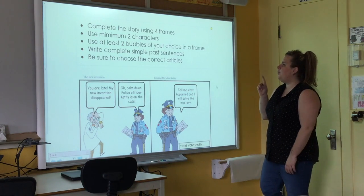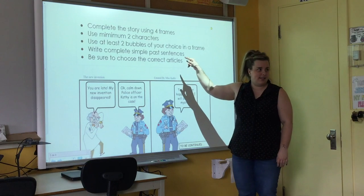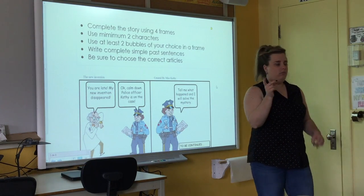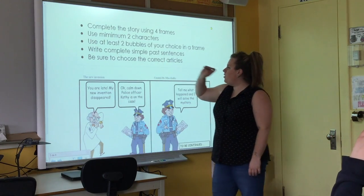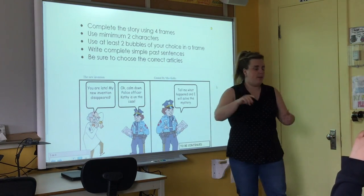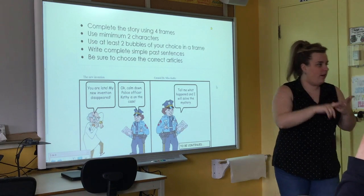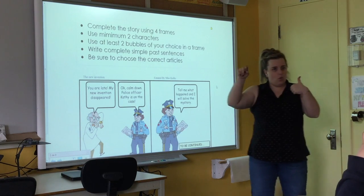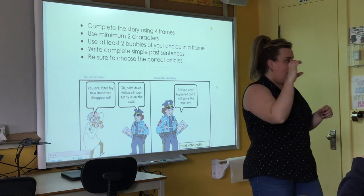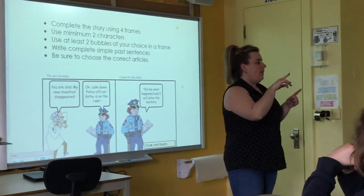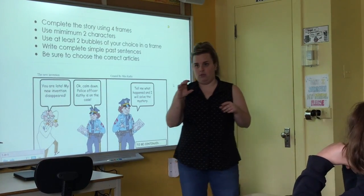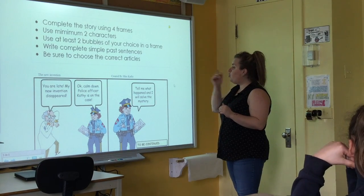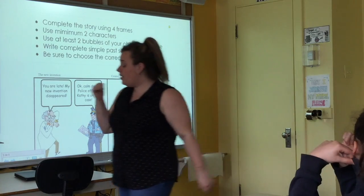You have to write complete simple past sentences — regular simple past or irregular, you choose. Be sure to choose the correct articles. For example, 'a' and 'the.' You use 'a' if the next word starts with a consonant sound, and 'an' when the next word starts with a vowel sound. Okay, don't forget the why.